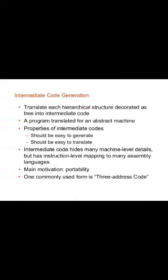Semantic analysis concerns the semantics — it generates meaningful sequences of characters for the given input string. It performs type checking and checks operand compatibility. Intermediate code generation generates the three-address code for the given input string, which is produced from semantic analysis. It translates each hierarchical structure into intermediate code.